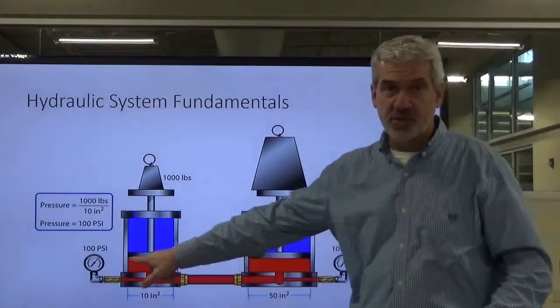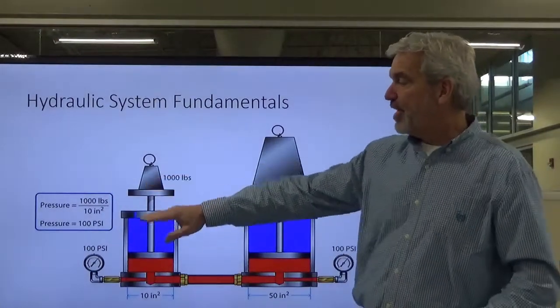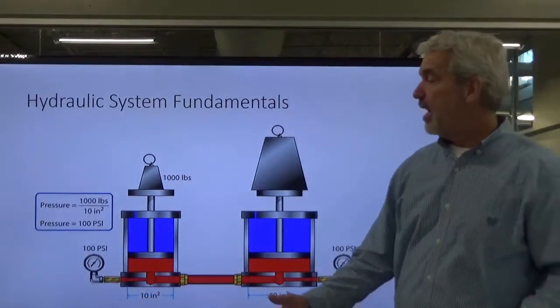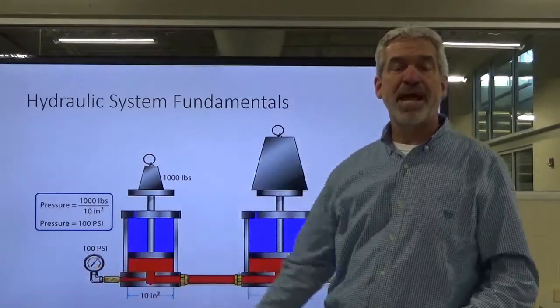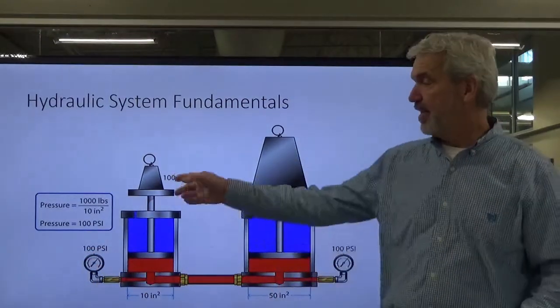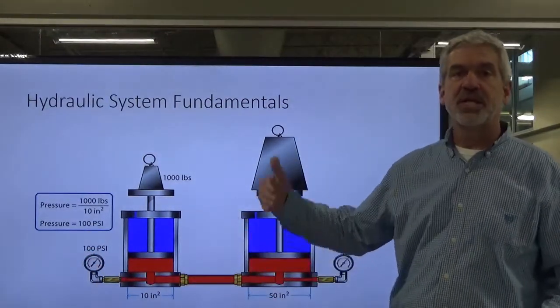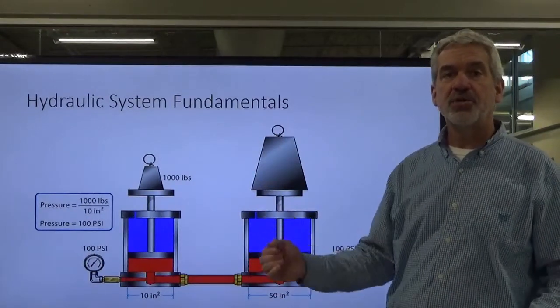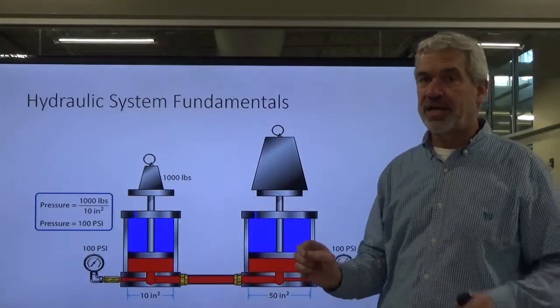So we divide 1,000 pounds by 10 square inches, and we are creating 100 pounds per square inch. 1,000 divided by 10 square inches is 100. 100 pounds per square inch.